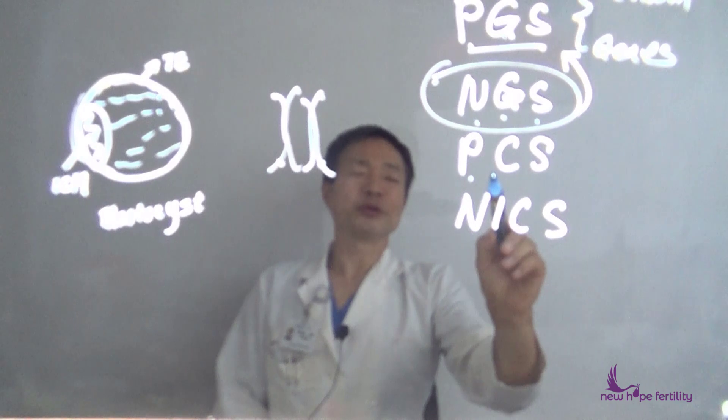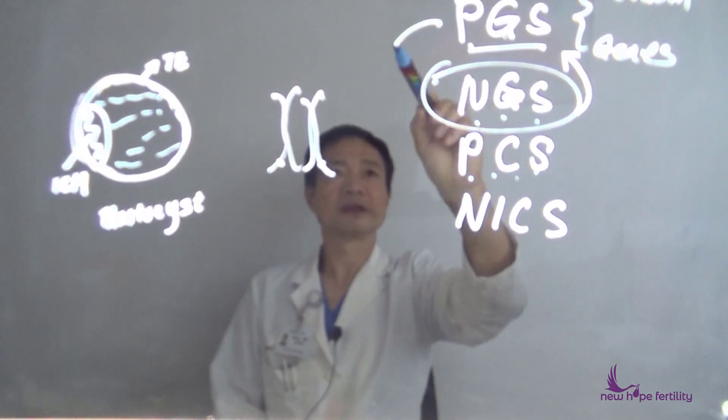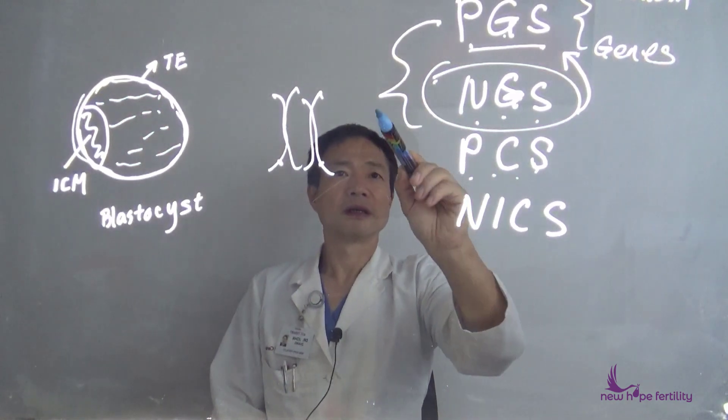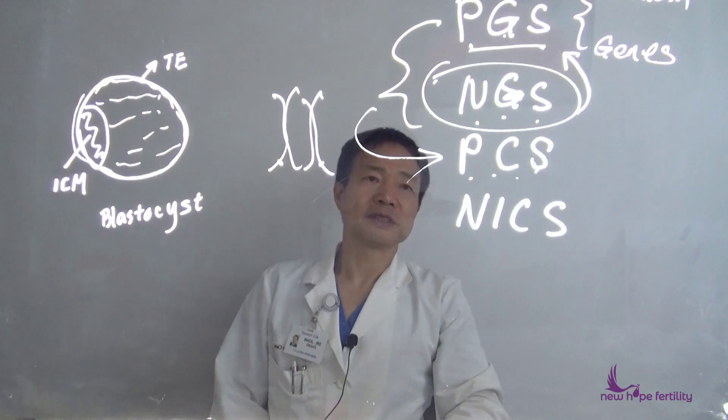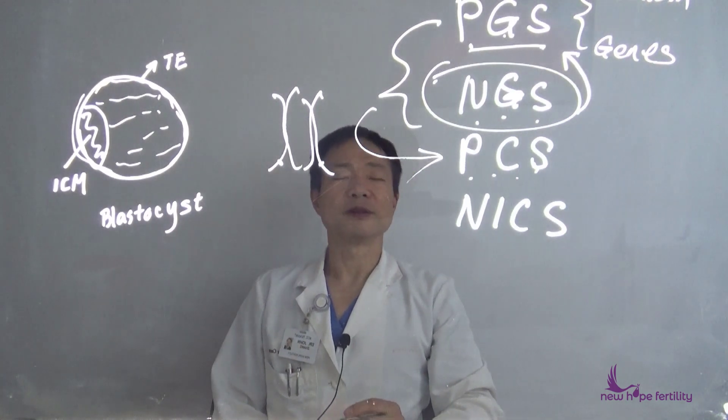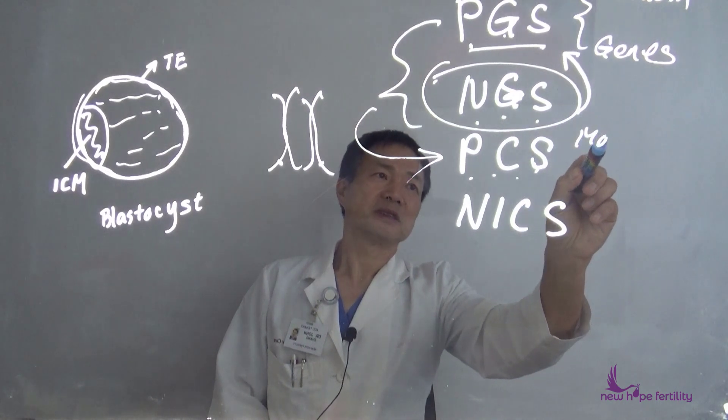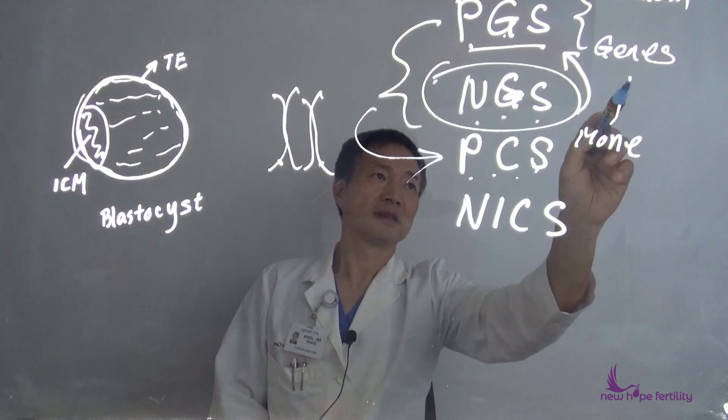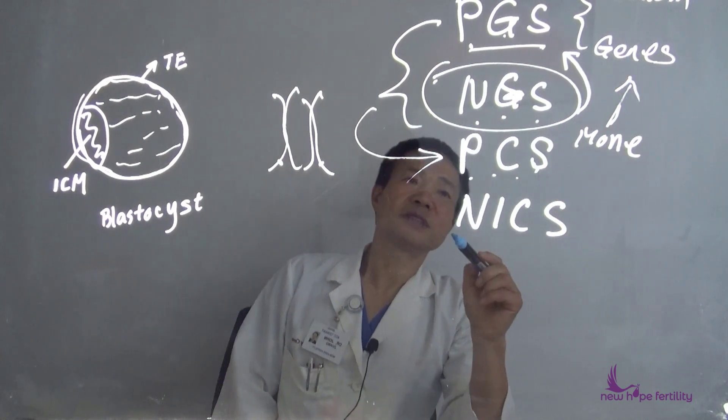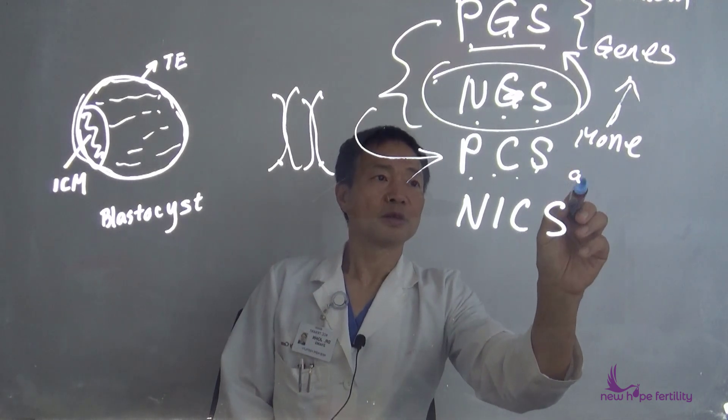Pre-implantation chromosome screen, these are the new terms for all of these. We can check for single genes called monogenes to check special gene defects. I'm sorry, maybe getting too technical. And if we say A, it means aneuploidy test to check the chromosomes.